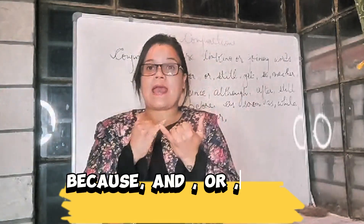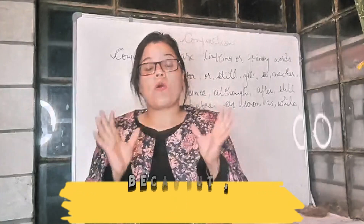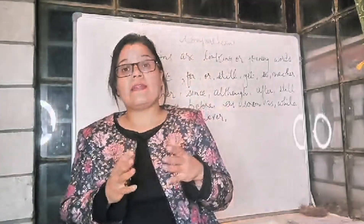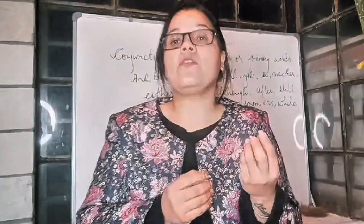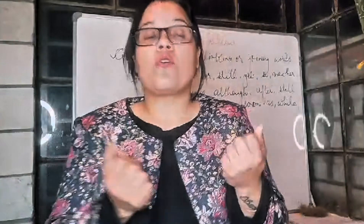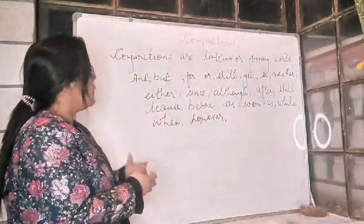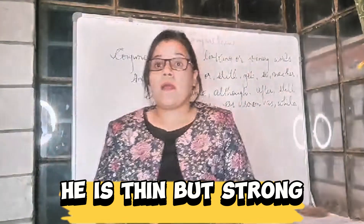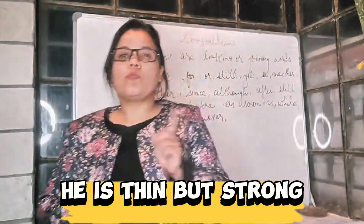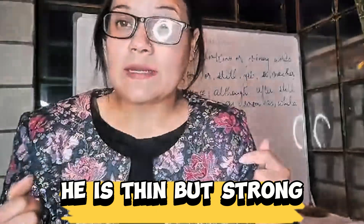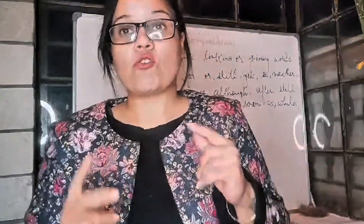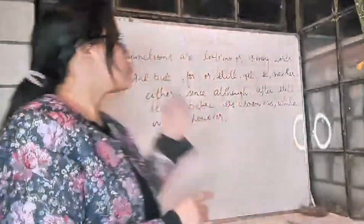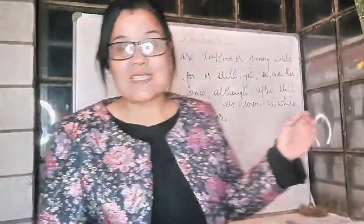So the joining words include: Because, And, Or, But — all known as conjunctions. And that is why they are called conjunctions — joining words. They help in joining two or more words or sentences. For example: 'He is thin but strong.' These two parts are joined by BUT, which is also a joining word. Now we will discuss conjunctions in detail.